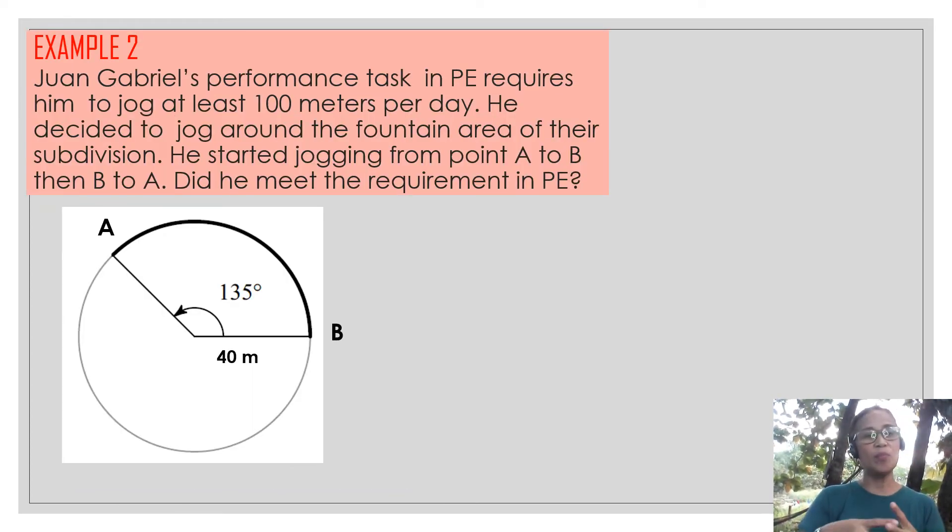This time, Juan Gabriel's performance task in PE requires him to jog at least 100 meters per day. He decided to jog around the fountain area of their subdivision. He started jogging from point A to B, then B to A. So which means from A went to B, then went back to A. Did he meet the requirement in PE?